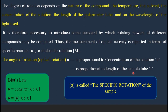Likewise, when the length of the sample tube increases, the plane polarized light has to pass through more chiral molecules. So when concentration increases or length of the sample tube increases, the plane polarized light travels through more chiral molecules, and the angle of rotation alpha also increases. Therefore, alpha is proportional to concentration c, and alpha is proportional to length l.